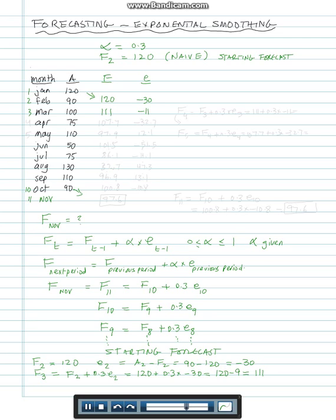Now let me calculate for April. What is F4? F4 is F3 plus 0.3 times E3. So F3 is 111 plus 0.3 times minus 11. So that's 111 plus 0.3 times minus 11, and we get 107.7.